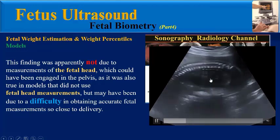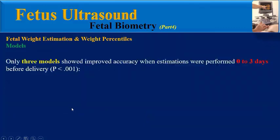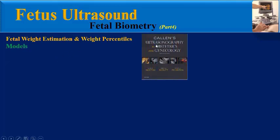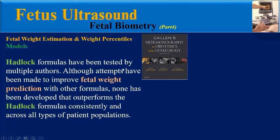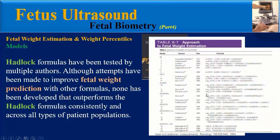The reduced accuracy close to delivery may be due to difficulty obtaining accurate fetal measurements. As shown in this clip, it was very difficult to obtain an accurate abdominal circumference plane for this fetus. Only three models showed improved accuracy when estimation was performed 0 to 3 days before delivery: the Jordan model, the Wu model, and Sabaha. According to reliable references, Hadlock formulas have been tested by multiple authors and none has consistently outperformed them across all patient populations.